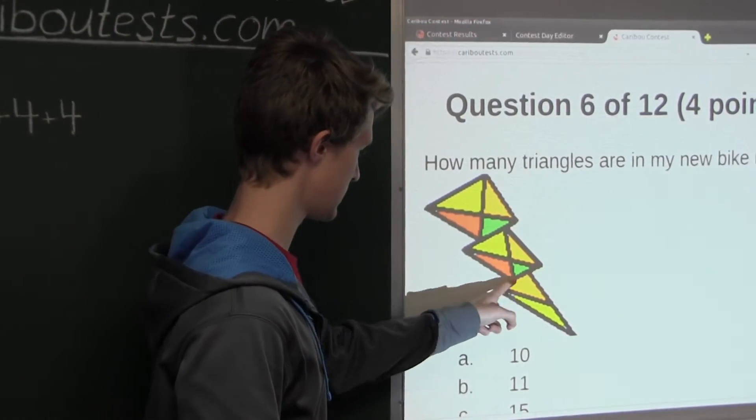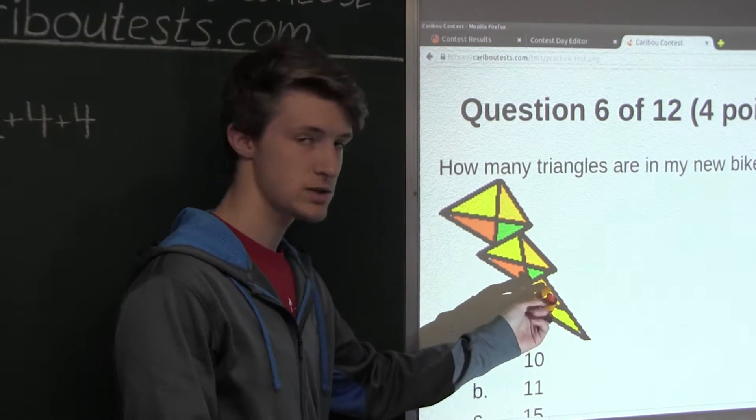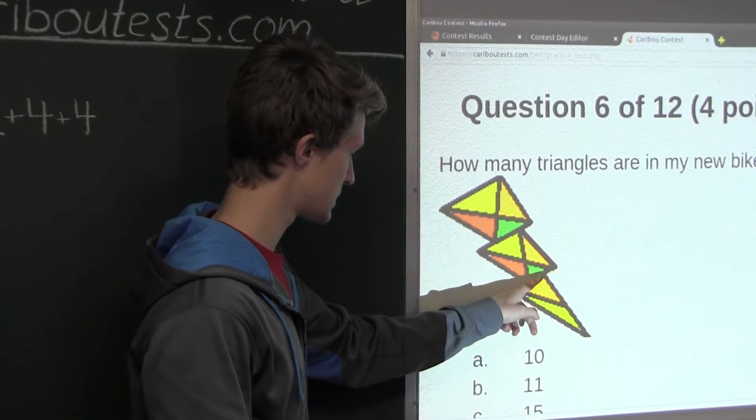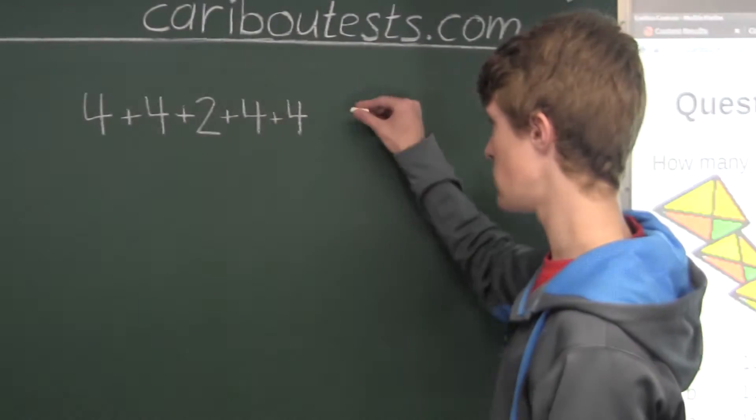Now finally let's look at this bottom large triangle. Well, there's only 2 smaller triangles here anyway, so it would just be this 1 triangle. So plus 1.